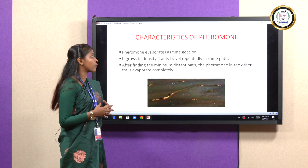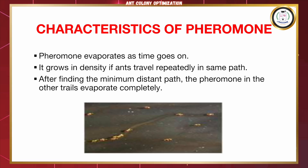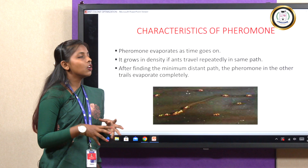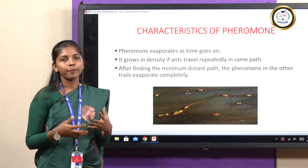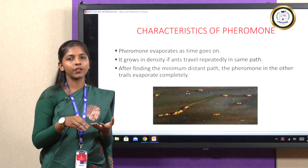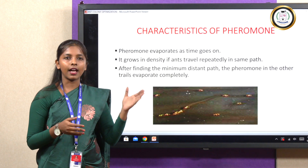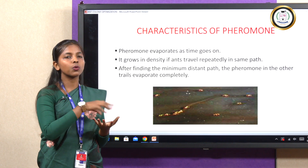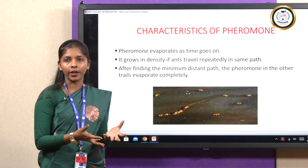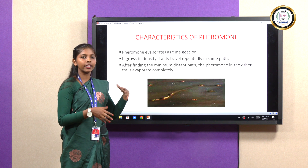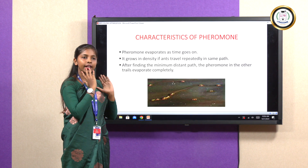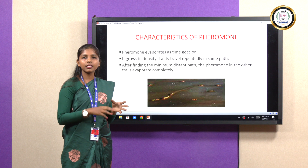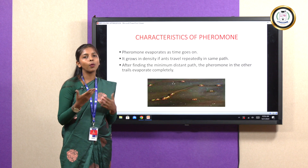Now we have the characteristics of pheromone. Pheromone evaporates as time goes on, and it grows in density when ants travel repeatedly on the same path. After finding the minimum distance path, the pheromone on the other trail evaporates completely. The reason pheromone evaporates is so it does not confuse other ants — because as ants travel toward a food source, that source gets emptied. When the ant goes to the next food point, the pheromone must direct them to the new food point and not the previous one. Hence, the previous pheromone trail evaporates over time.